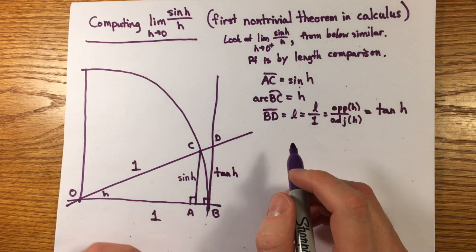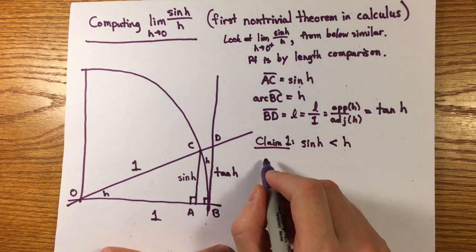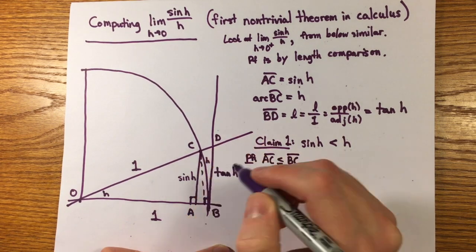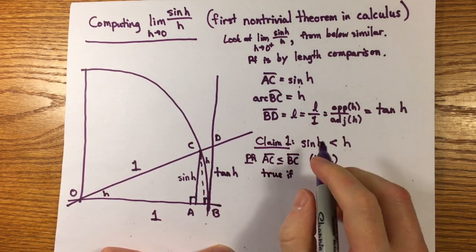So, it's possible to infer from this diagram the following two inequalities, which I'll distinguish as two claims. Claim 1, sine h is less than h, or the chord is shorter than the arc.